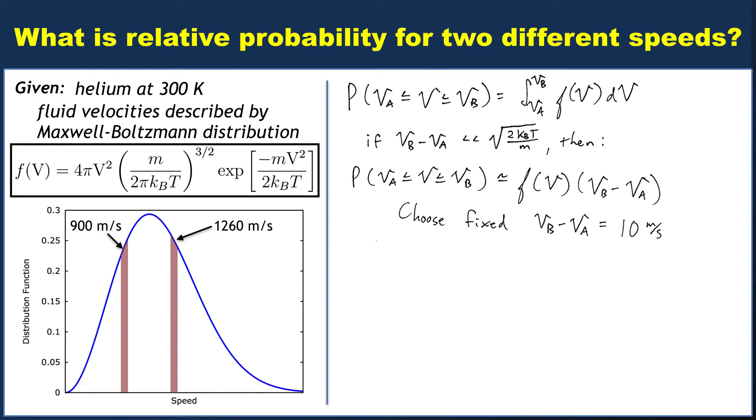If you do that, then the probability of finding some velocity V1 would just be F evaluated at V1 times 10 meters per second. If you wanted to find some other velocity V2 using Vb minus Va of 10 meters per second, that would just be F evaluated at V2 times 10 meters per second.